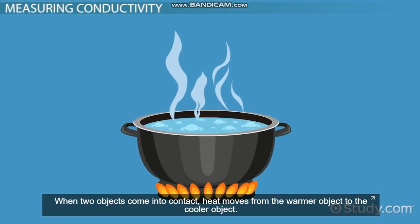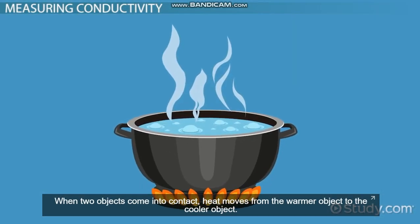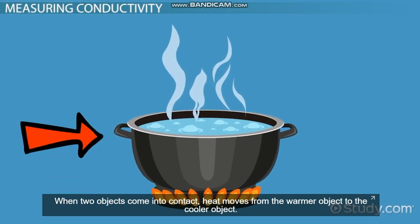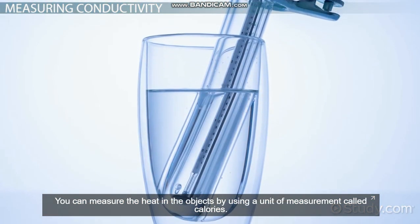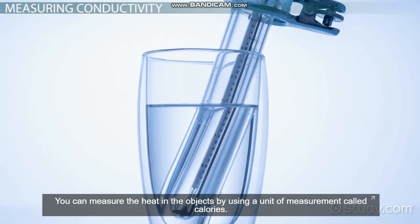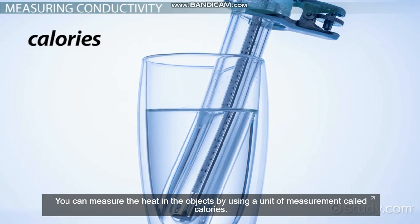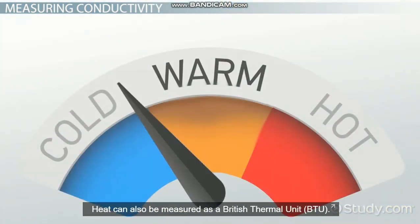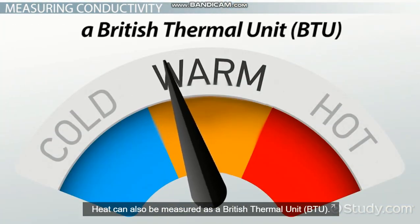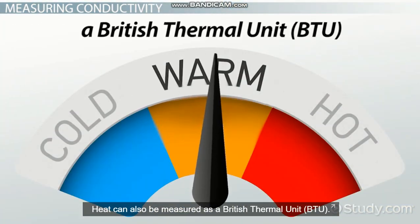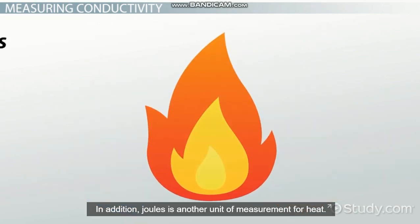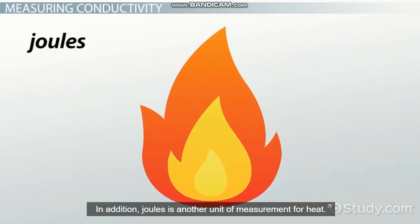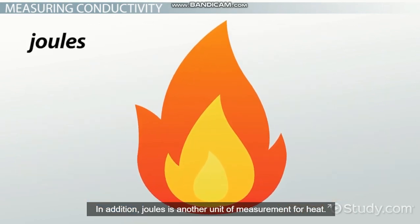When two objects come into contact, heat moves from the warmer object to the cooler object. You can measure the heat in the objects by using a unit of measurement called calories. Heat can also be measured as a British thermal unit, BTU. In addition, joules is another unit of measurement for heat.